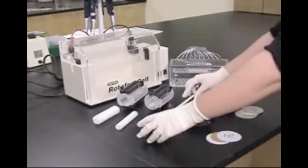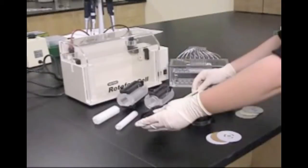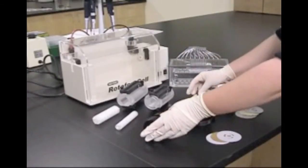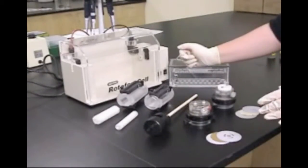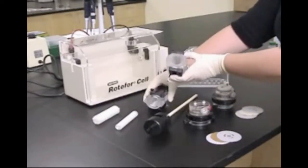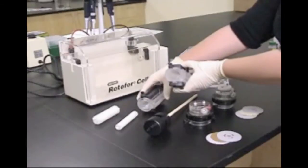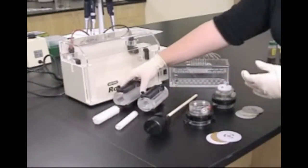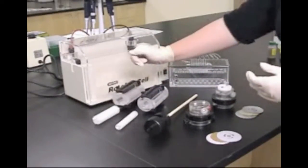All of which are assembled around a central ceramic cooling finger. The Rotifor system provides two different but interchangeable focusing chambers. The standard chamber, which holds 35 to 60 milliliters of sample, and the mini focusing chamber, which has a smaller internal diameter to hold 18 milliliters of sample.